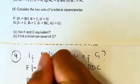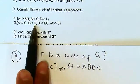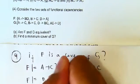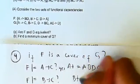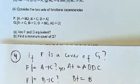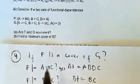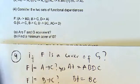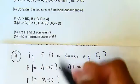Then we check if F can logically imply the other element of G, which is B→C. We compute B+ using the functional dependencies from F. From B we get C. Actually B→C is directly given in F, so we don't even need to check further. The answer is yes.